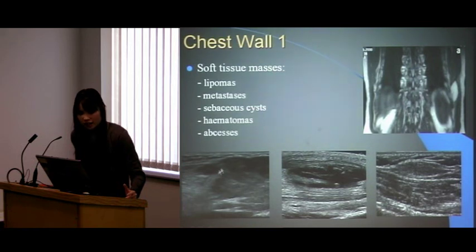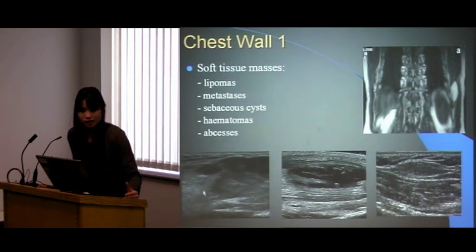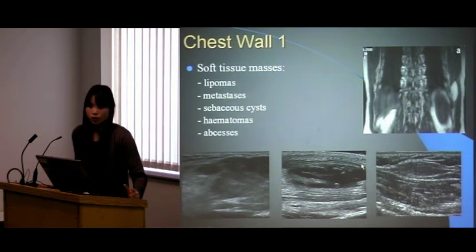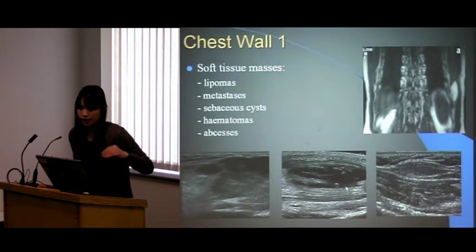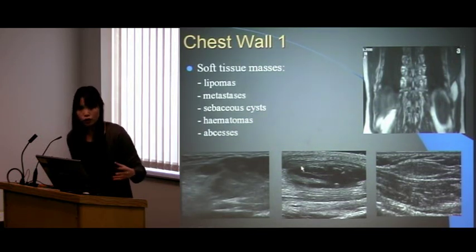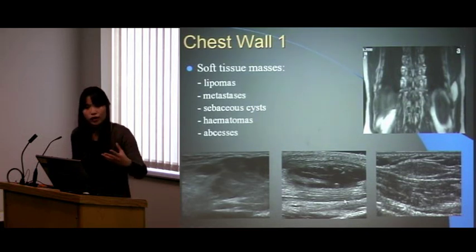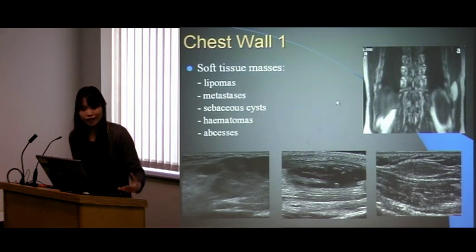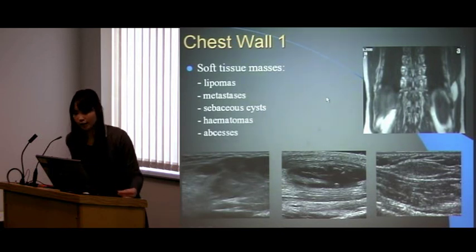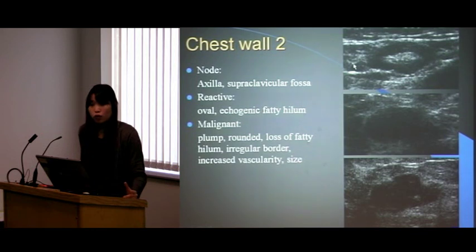An ugly ill-defined heterogeneous lesion is a soft tissue metastasis — if you can't really see the borders properly, that's bad news. For a hematoma — in a patient who had a fall — you can see it's quite well-defined with anechoic areas inside and some fibrin. Note the posterior acoustic enhancement — it's brighter at the back — which is quite typical of hematomas. If clinicians ask whether it could be an abscess, tie it in with the history.